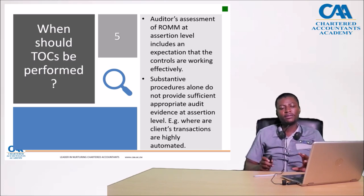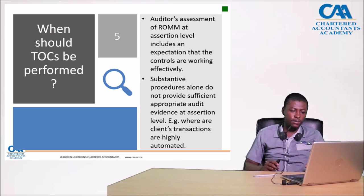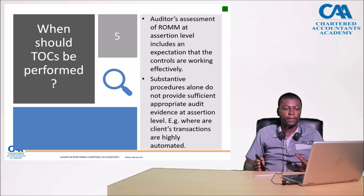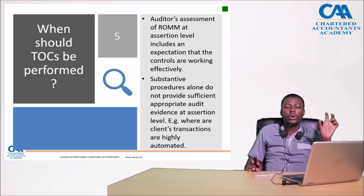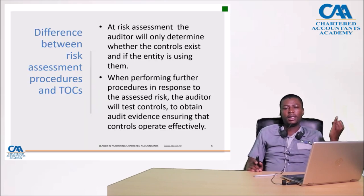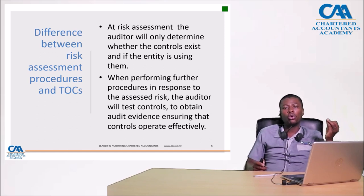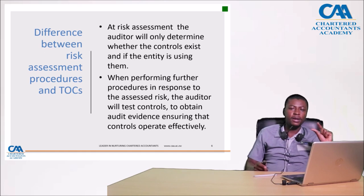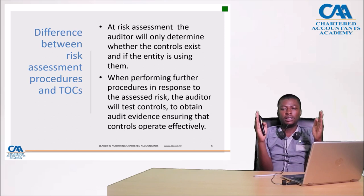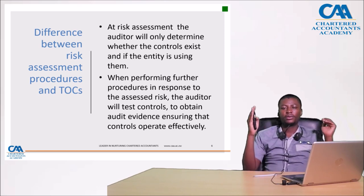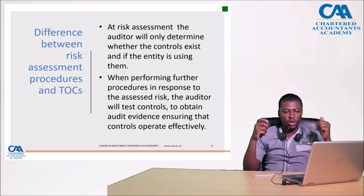What is the difference between what we do as part of the risk assessment and what we are going to be doing with testing controls? From a risk assessment perspective, we identify controls and assess whether those controls are properly designed. We may also identify any control weaknesses. But when we are testing controls, we confirm whether those controls are actually working in practice. That brings us to tests of controls.